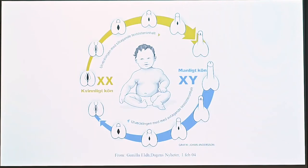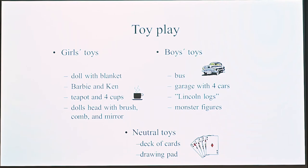What else can we learn from CAH? We can learn about cortisol deficiency, aldosterone deficiency, and cortisol overtreatment. But we can also learn about the androgen excess that these individuals were exposed to prenatally — this is like an experiment of nature where we can see what happens with individuals with 46XX chromosomes exposed to different levels of androgens.